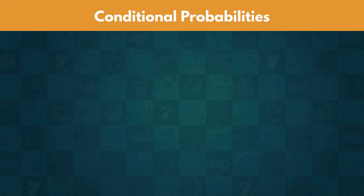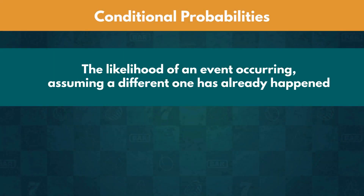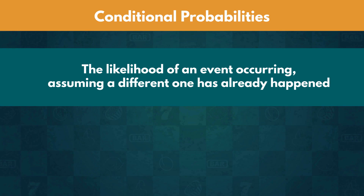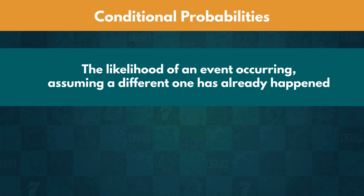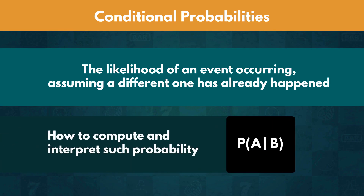Conditional probability is the likelihood of an event occurring, assuming a different one has already happened. In this lecture, we are going to show you how to compute and interpret such probability.